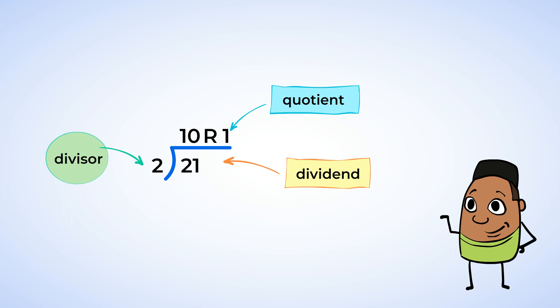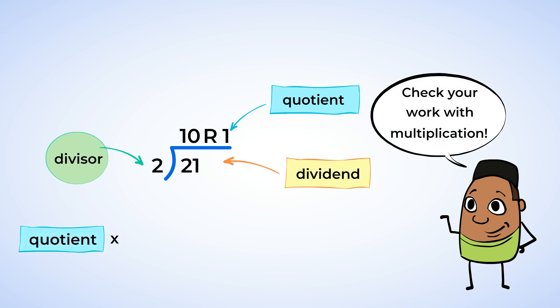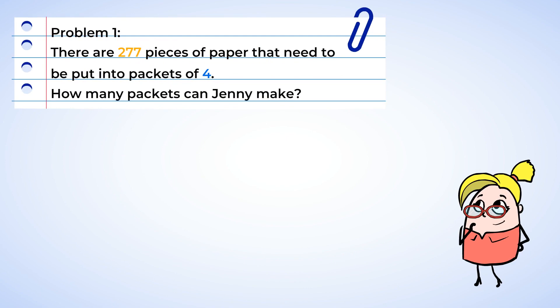Now that was a really simple example I know, but you've got the idea now, right? Also to be sure you divided correctly, use multiplication. When you multiply the quotient by the divisor and add the remainder, the result has to be the dividend. And it is. Great! Now let's practice with a few problems.